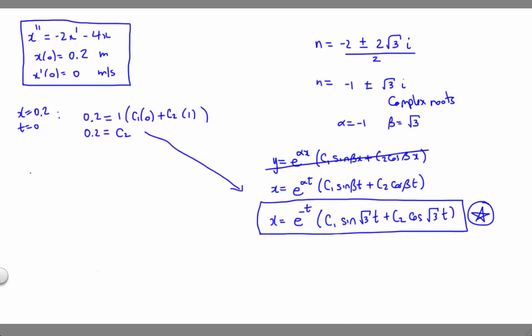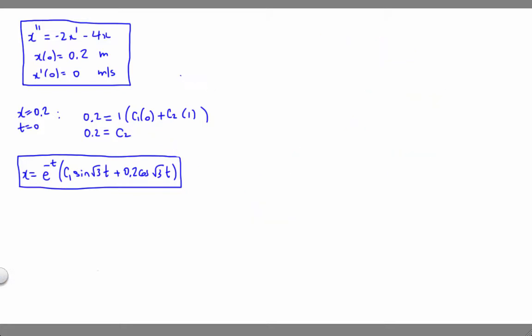So let's take this information, let's plug it in here, and we'll update our function. So now we can say x is equal to e to the negative t times c1 sine root 3t plus 0.2 cos root 3t. Put a box around that because that's our most recently updated version of our function now.